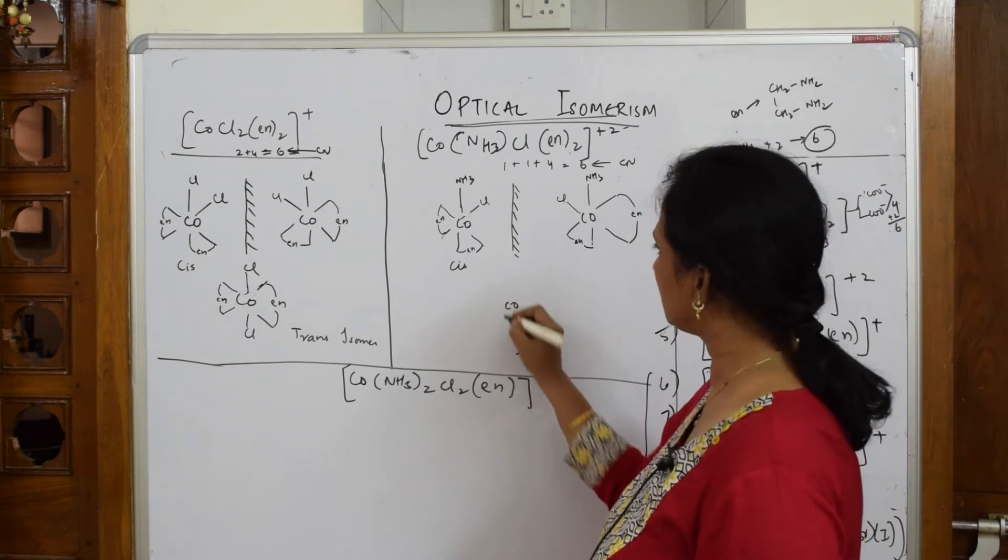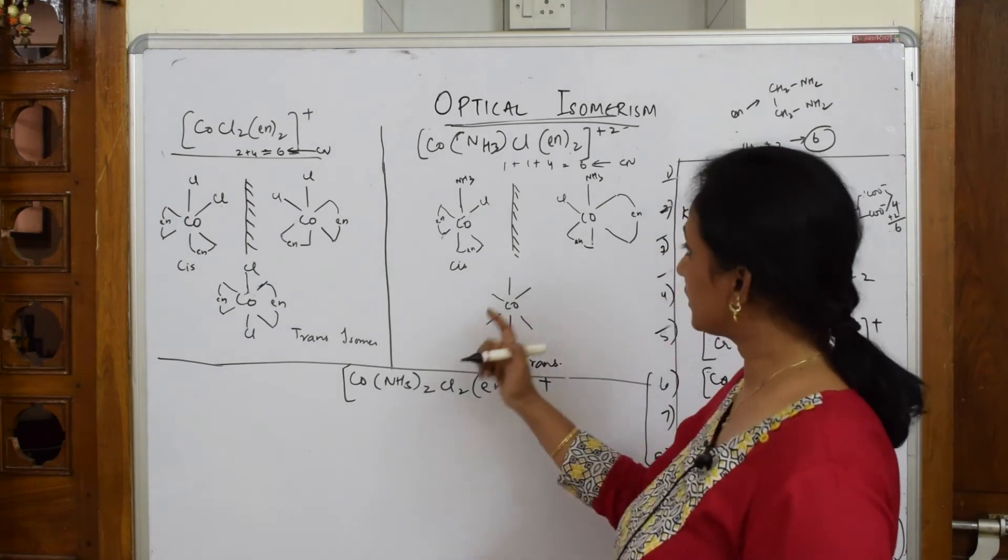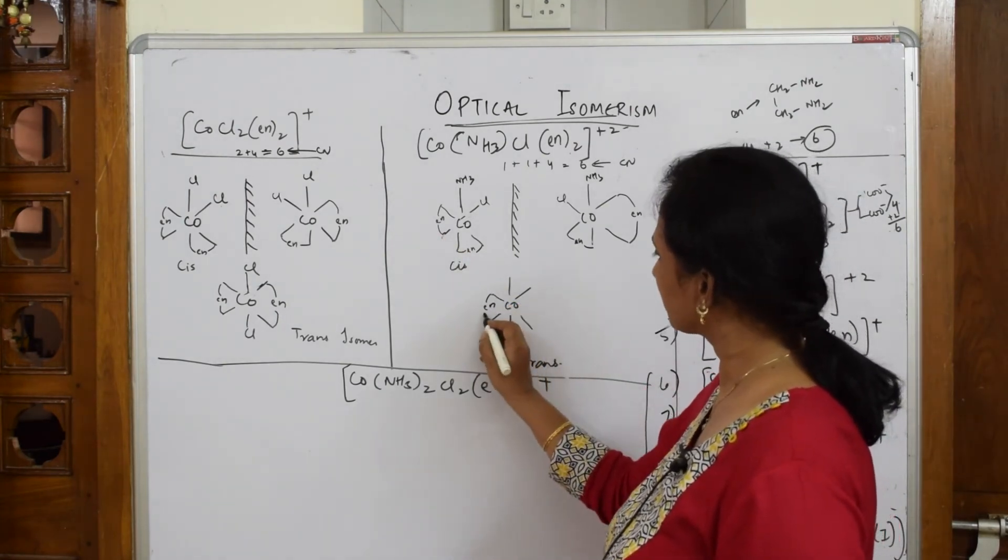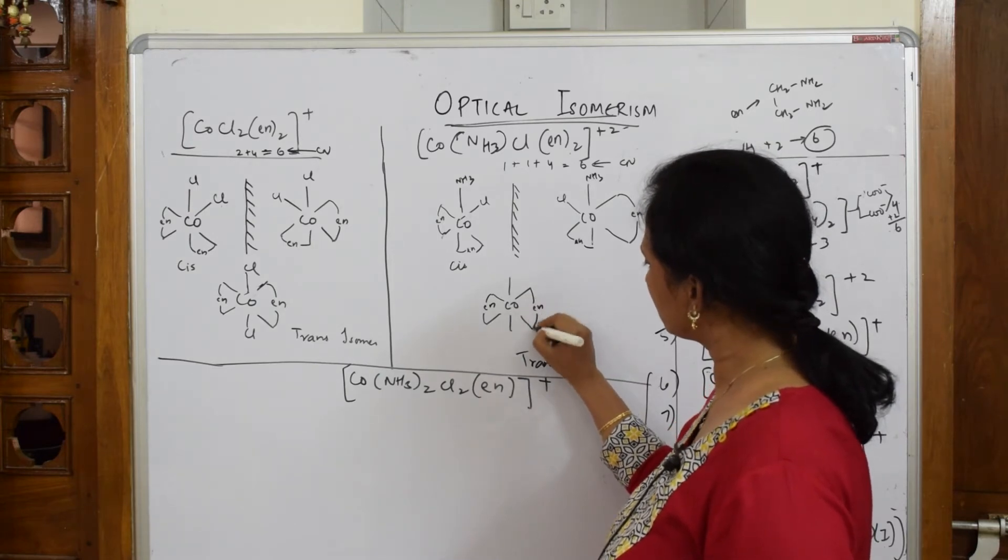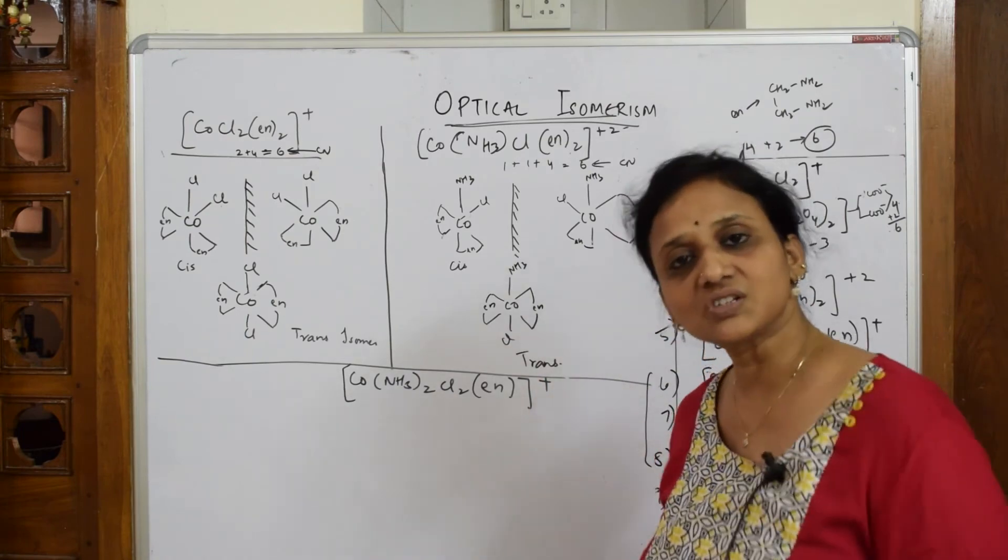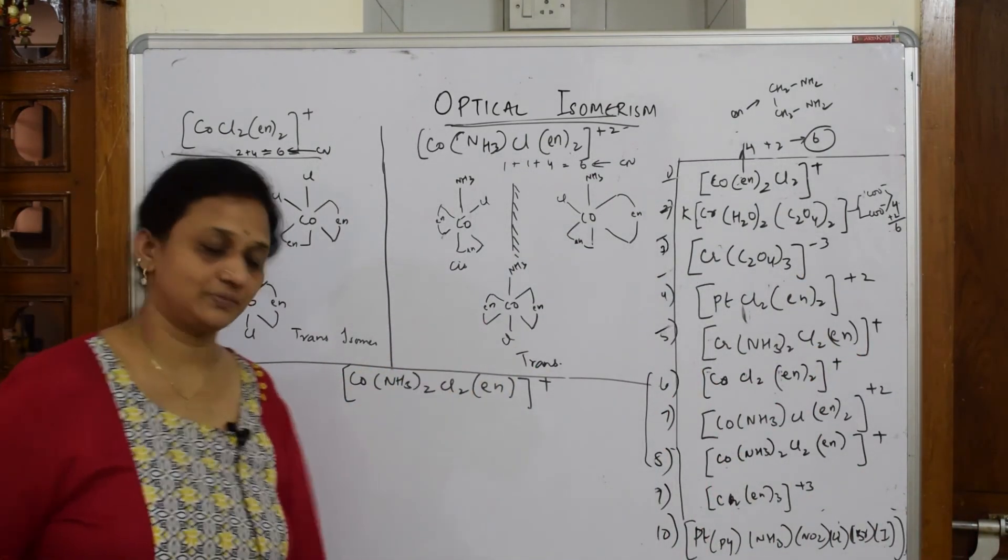Now if I have to draw trans isomer of this, copy the same: CO 1, 2, 3, 4, 5, 6. For trans, these two should be on the opposite side. EN is here, EN is here, Cl below, Cl below. So this is a trans isomer because the groups are opposite to each other.